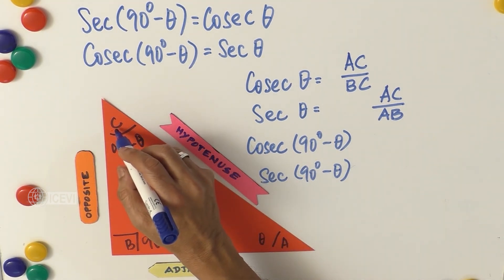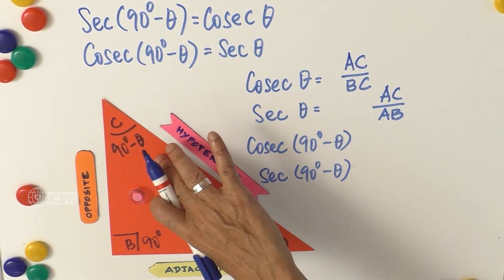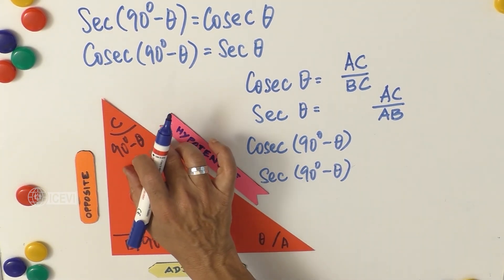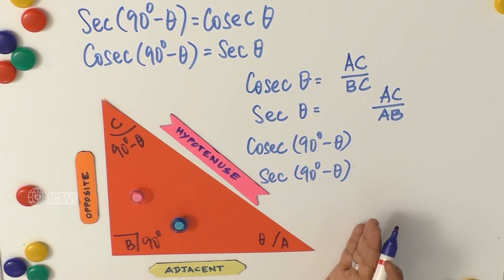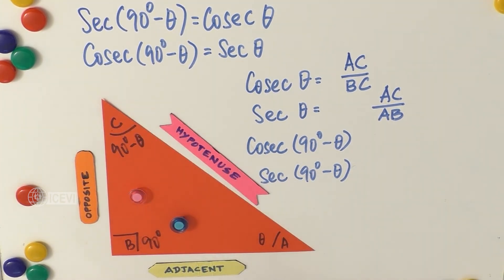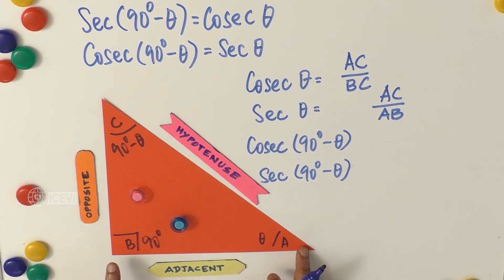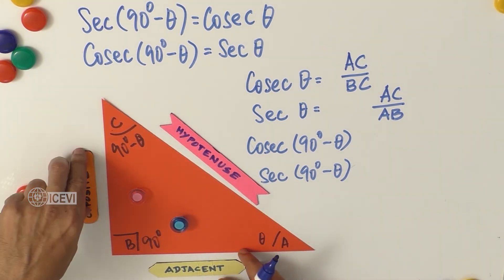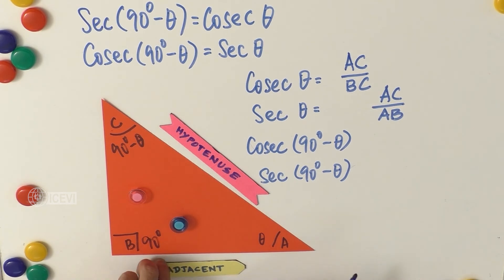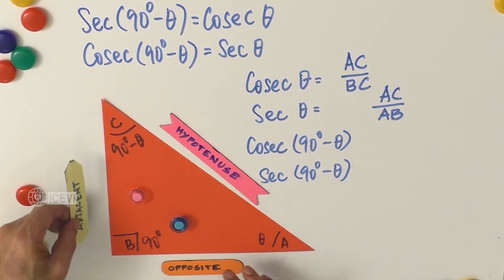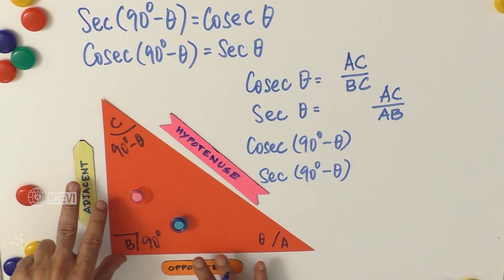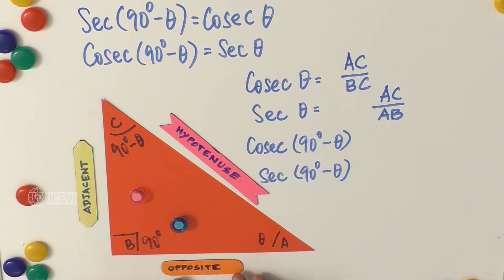When we take angle A as theta, angle C becomes 90° minus theta. Now let us take C as the reference angle. When C is the reference angle, AB becomes the opposite side and BC becomes the adjacent side. The hypotenuse does not change, so instead of changing the triangle we simply reassign the sides: AB is opposite and BC is adjacent.